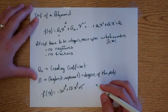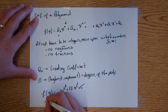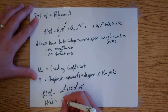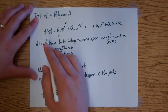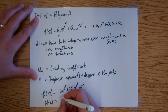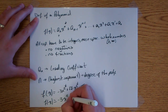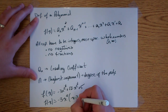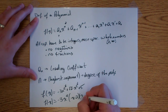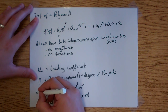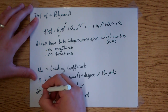Another example of a polynomial that is not written in standard form would be something like negative 3x to the fourth times x minus 2 times x plus 3. These are polynomials.